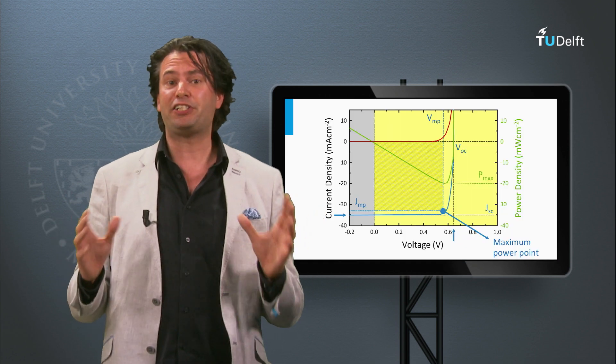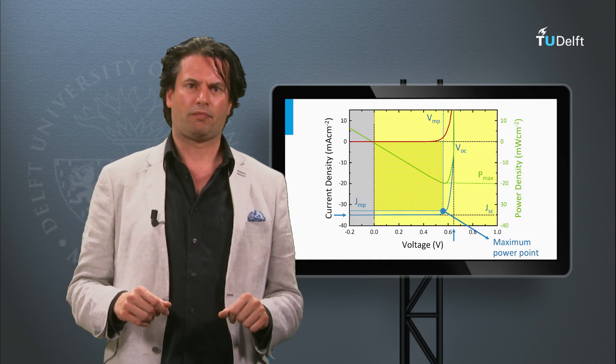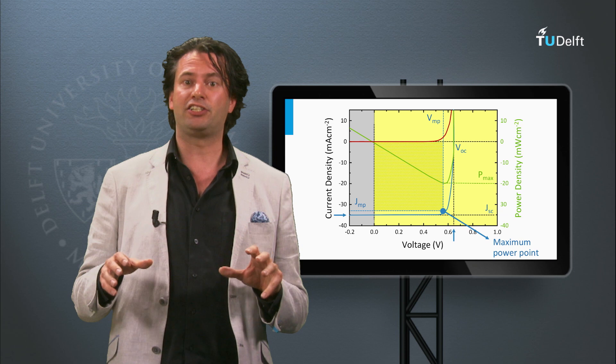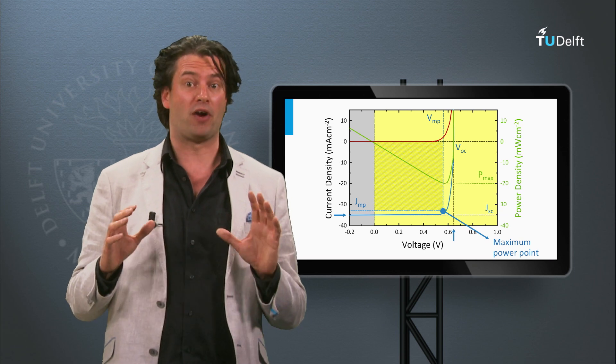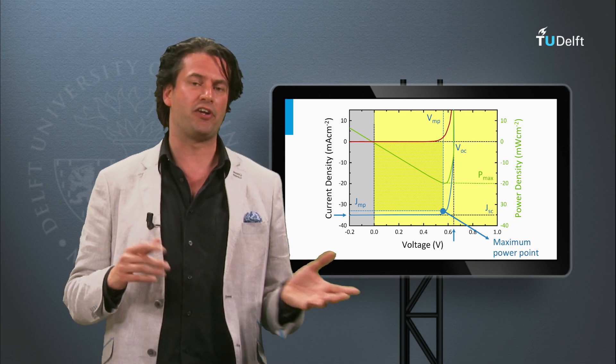We are going to measure the efficiency of a solar panel. We do this by measuring the JV curve and its external parameters, as discussed in the previous block.